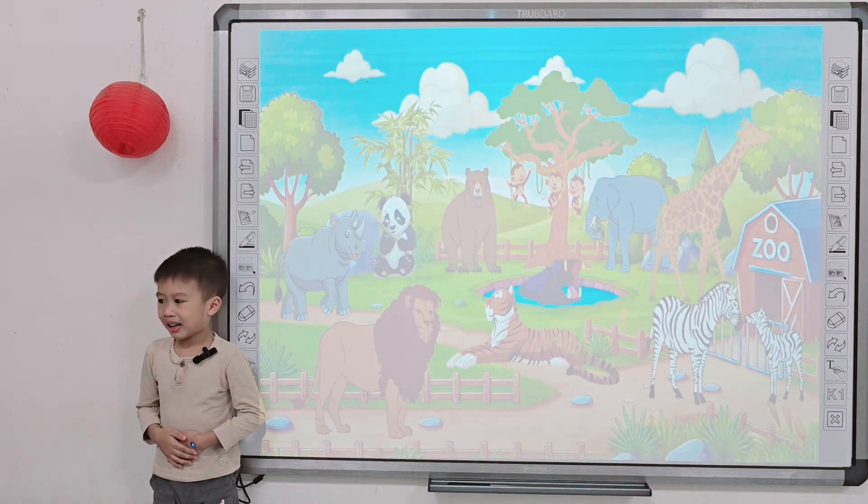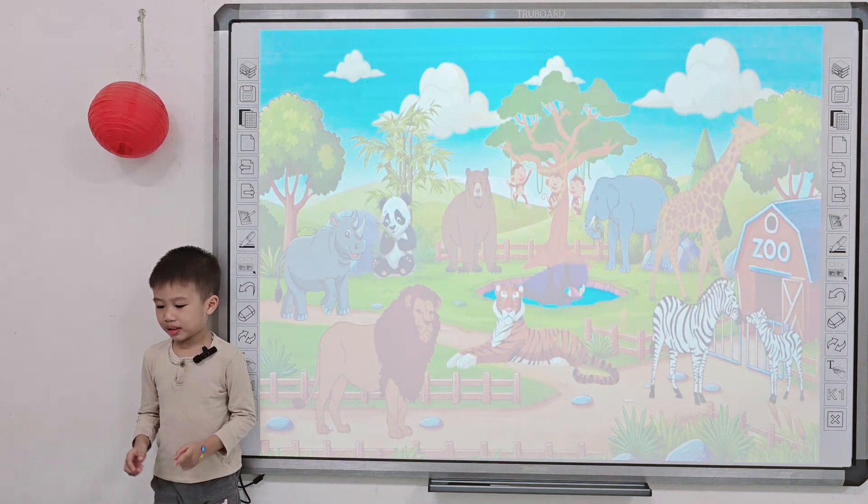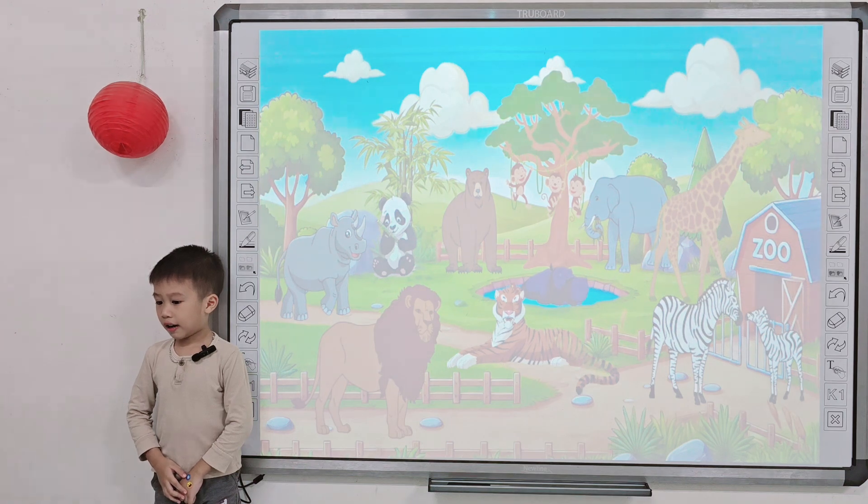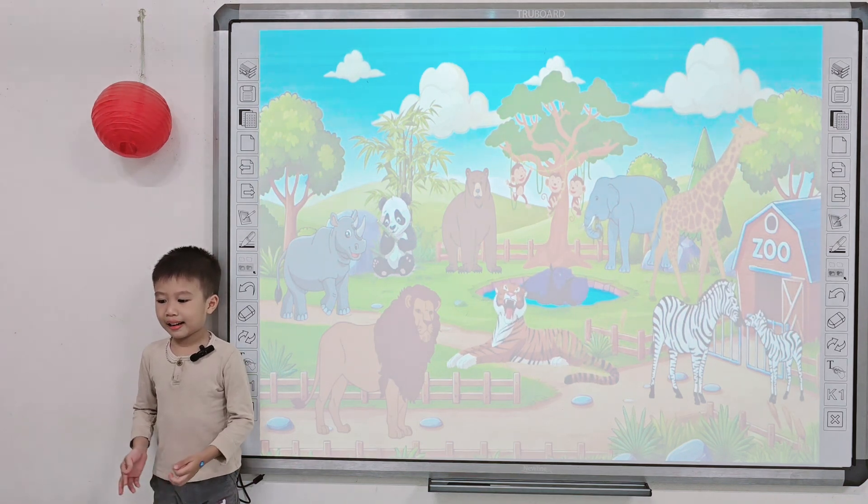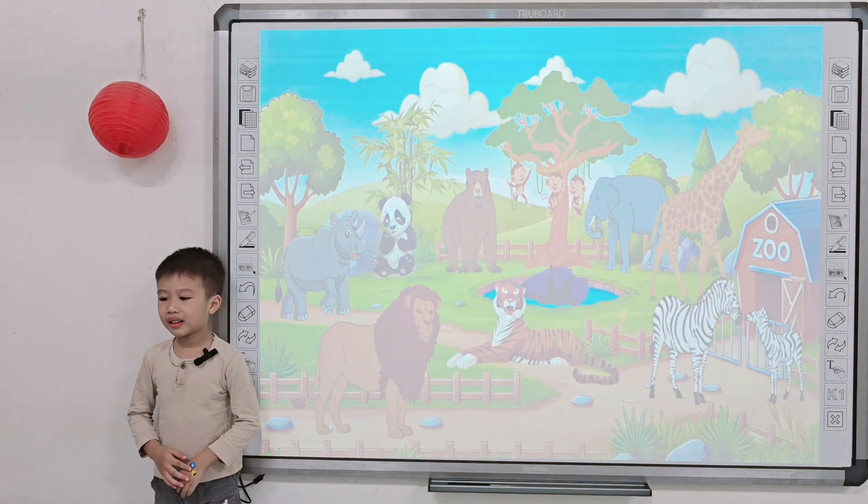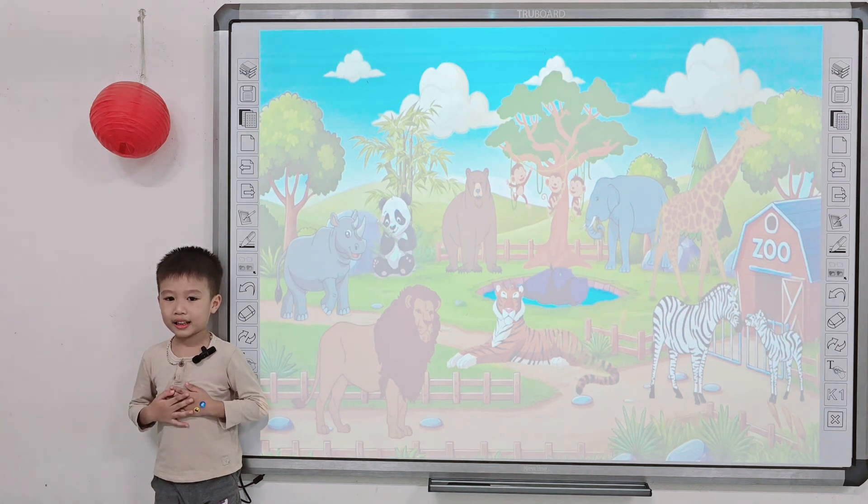Hello, teacher. My name is Lam. I'm six years old. I'm from Berlin. I live in Hương Yên. I'm fine. Thank you, and you?